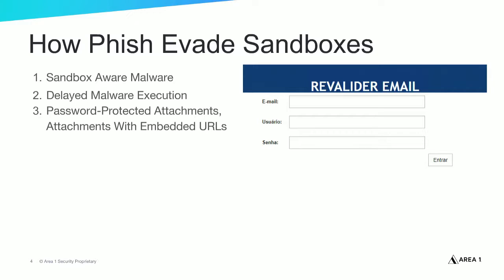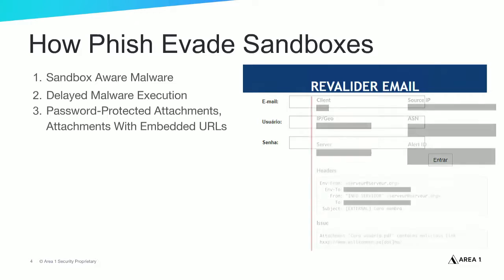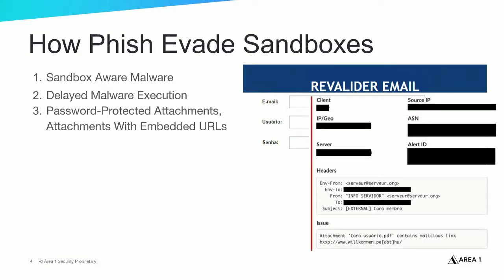Sandboxes also don't always analyze links in file attachments. For example, the screenshot on this slide shows a credential harvest webpage whose URL was embedded in an email attachment. Most sandbox technologies wouldn't detect this attachment as malicious.